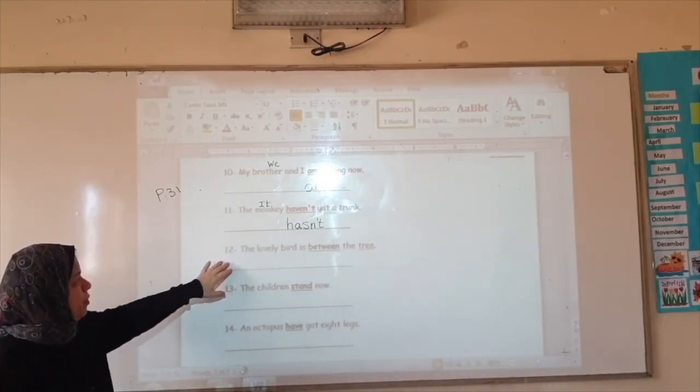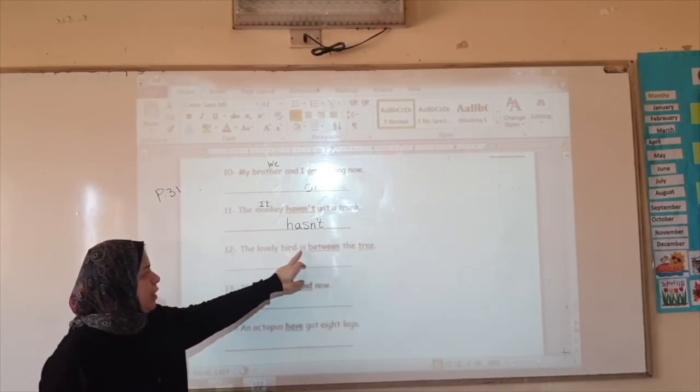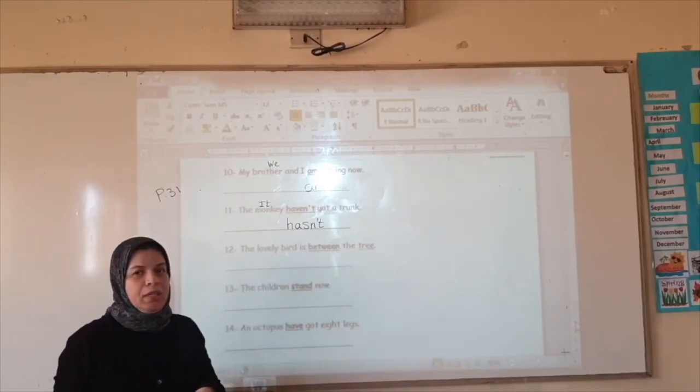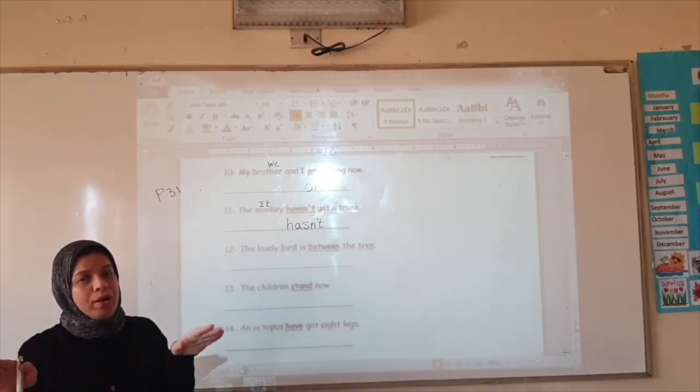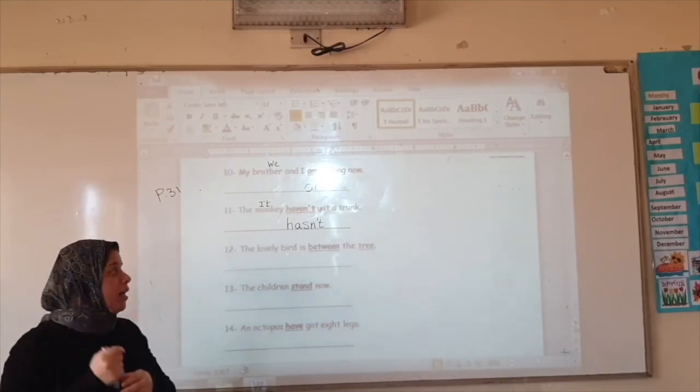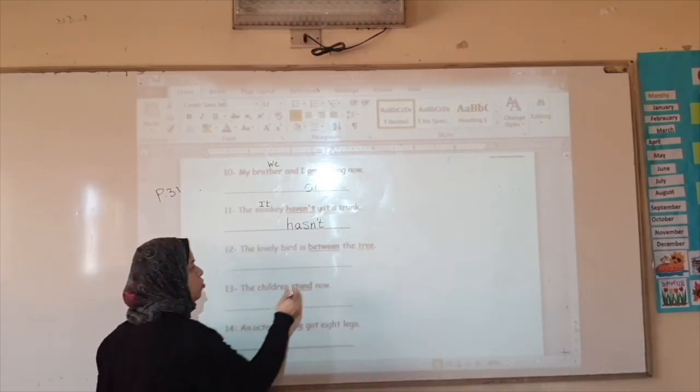Number twelve. The monkey bird is between the tree. The bird. The nest of the bird is in the tree, not between.